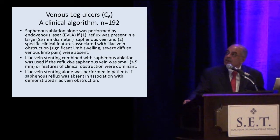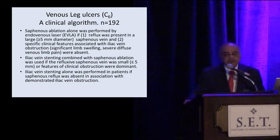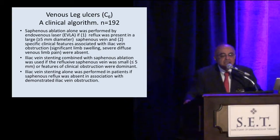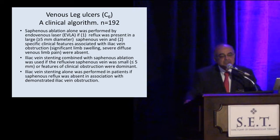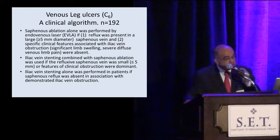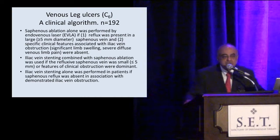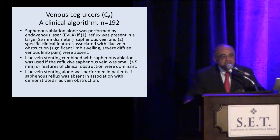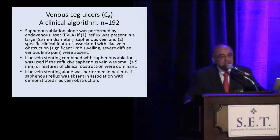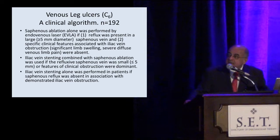It's easier to ablate the saphenous vein than put in an iliac vein stent, so this algorithm uses that basis. Saphenous ablation alone is indicated if saphenous reflux was present in a large saphenous vein and you didn't have clinical features of iliac vein obstruction. You do both saphenous ablation and iliac vein stenting if the saphenous vein is kind of small and not the major player, or even if the saphenous vein is large but you have significant symptoms and clinical features of iliac vein obstruction — for example, massive swelling in addition to ulceration. Just taking out the saphenous vein is not going to do anything to the massive swelling; you have to do iliac vein stenting for it.